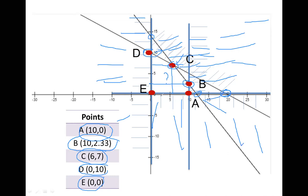We now have all the corner points. One of them maximizes the objective function and one minimizes it. We need to find which point maximizes the objective function 600x1 plus 1000x2. We put each corner point into the objective function by substitution and look at which point gives the maximum value.